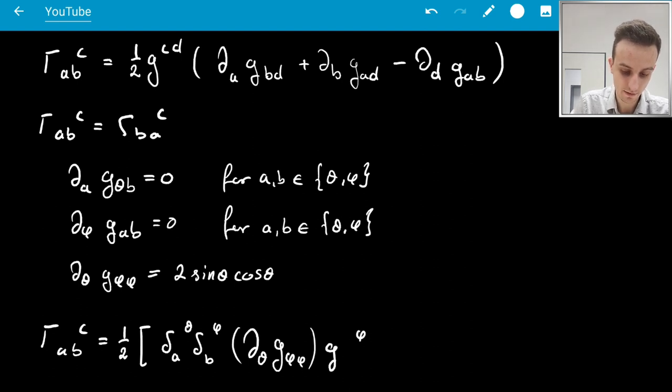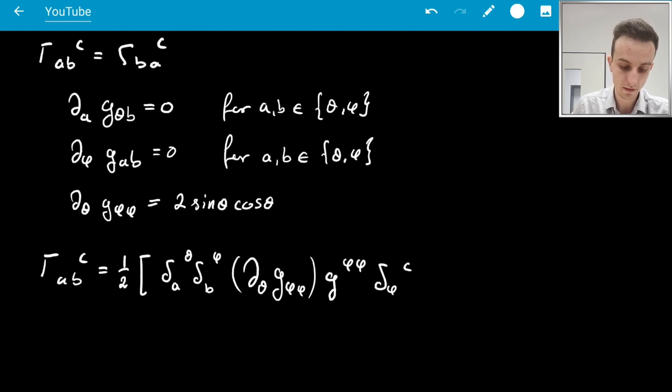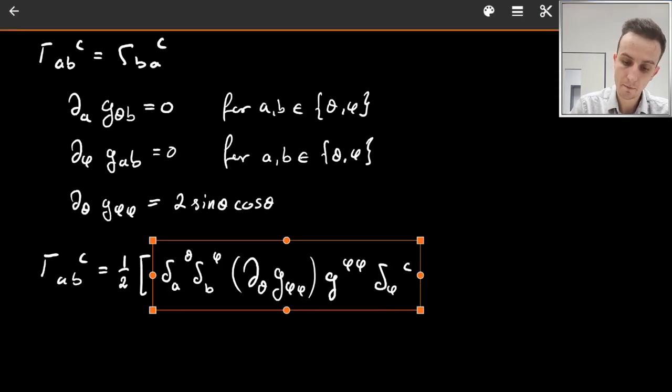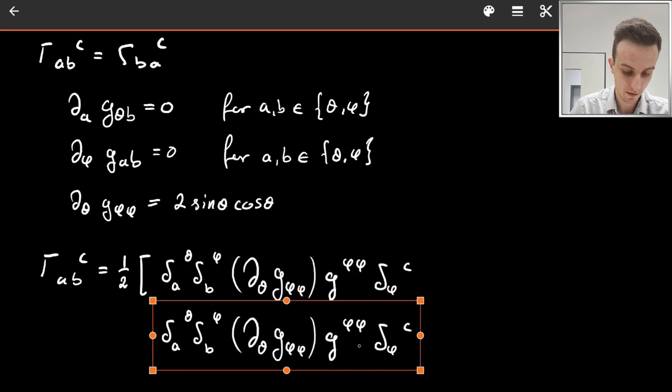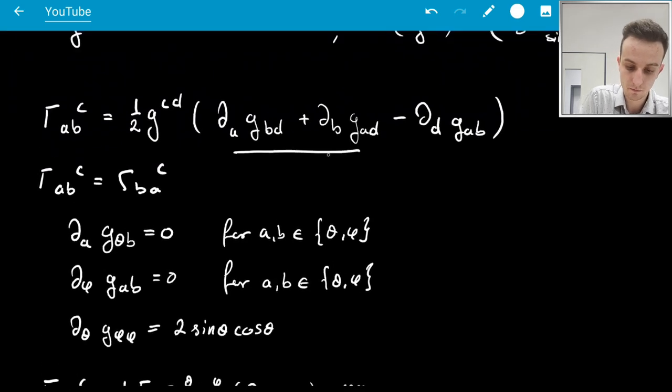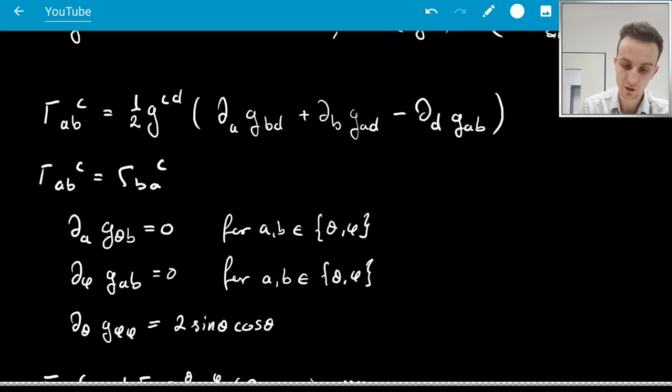So what I have left is the G, D is phi, therefore C also has to be phi, so I have the Kronecker delta that collapses C into phi. Now I have the same term, except with A and B exchanged. This is because of the symmetry with these two and exchanging A and B.